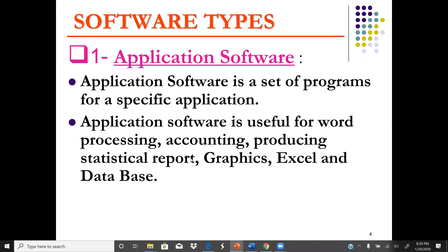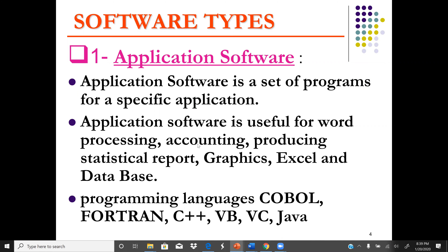Examples of application software include Excel, database systems, graphics, accounting, and word processing. Application software can be written using different programming languages such as COBOL, Fortran, C++, Visual Basic, Visual C, and Java.